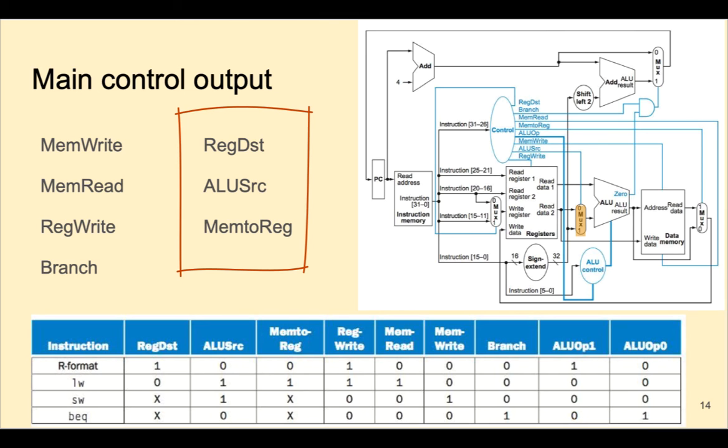For ALU source, the RT out of the register file points to the 0 in the multiplexer, and the sign-extended 16-bit immediate field points to 1. For mem2reg, what was read from data memory points to the 1, and what comes out of the ALU points to the 0.